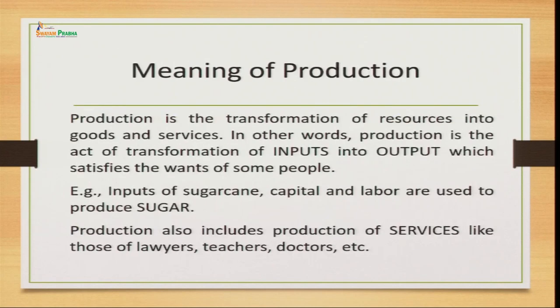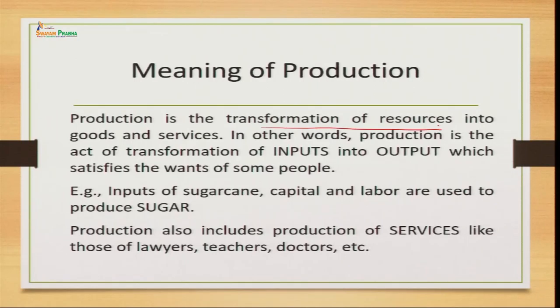Let us first understand the meaning of production. Simply, production is a process — it is a process of converting input into output. In a better form, you can say it is a transformation of resources into goods and services. You have inputs which may be of no use on their own, but through the production process you are converting them into goods and services which have value and can satisfy the needs and wants of customers. In other words, production is an act of transformation of inputs into output, which helps in the satisfaction of wants of people.